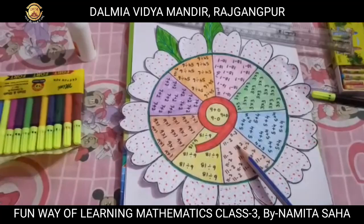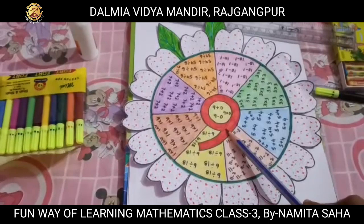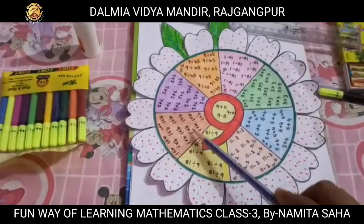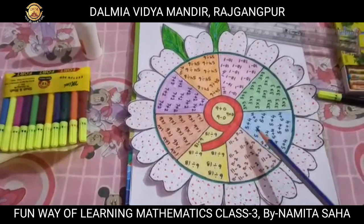Hope you have understood this activity. You will try to do this activity at home. I have designed it as a flower, but you can design it as you wish. You can also take any other number rather than 9 and try to represent that number in different forms as I have done, using the arithmetic operations of addition, subtraction, multiplication, and division. Okay children, that's all for today. Thank you.